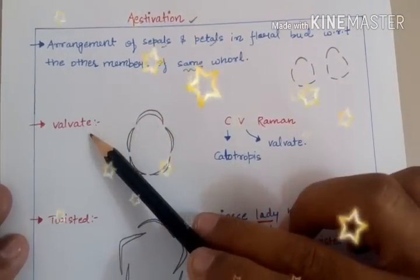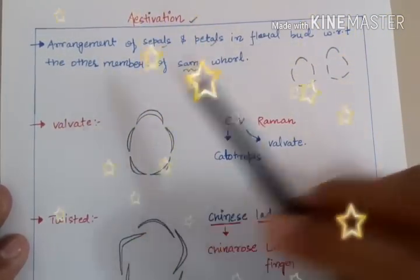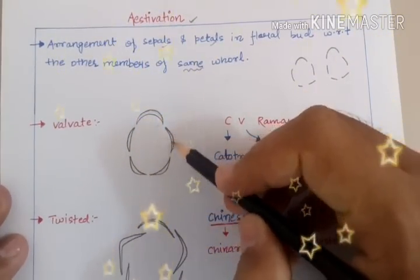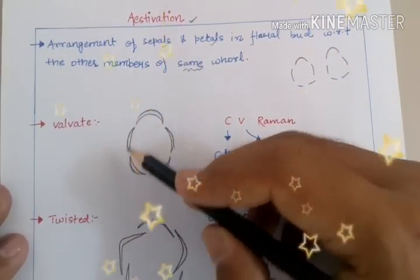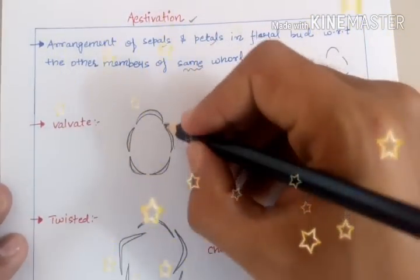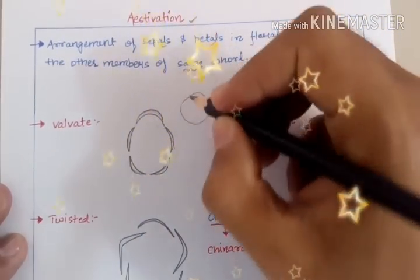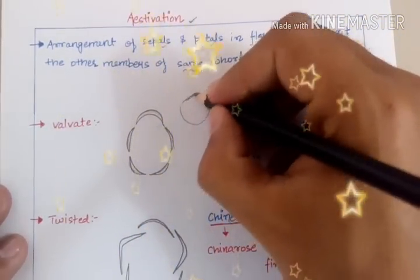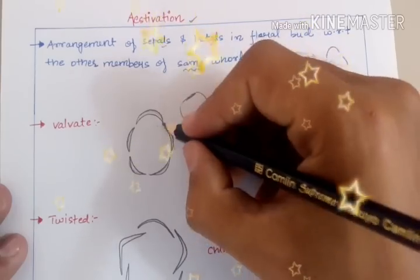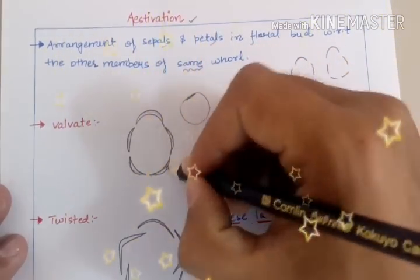The first type is Valvate Estivation. In Valvate Estivation, the particular parts of the calyx or corolla — the sepals or petals — are just attached to each other but they are not overlapping. These are not overlapping each other; they are just connected end by end.